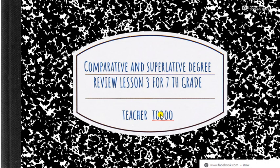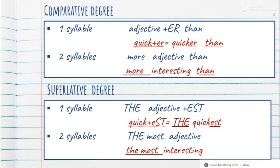Comparative meaning is қарцылсын — okay, қарцылсын жерк. So, comparative degree: for one-syllable adjectives, use adjective plus -er than. You add -er after the adjective, then use 'than' to compare.